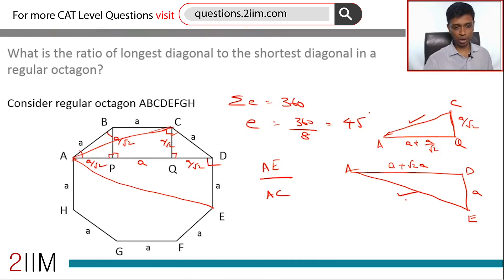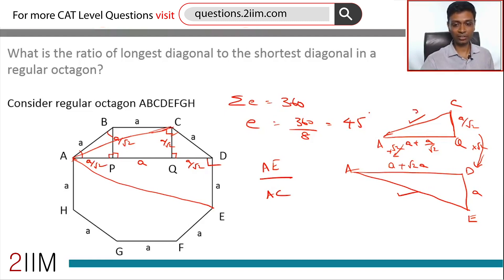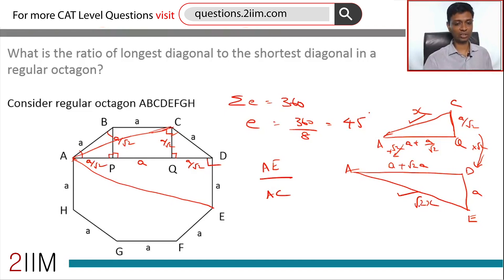There is a quicker approach if you can spot it. Triangles ACQ and AED are similar triangles — just smaller and bigger versions of each other. If one leg is x, the corresponding leg in the larger triangle is √2·x. So AE is √2 times AC, meaning AE/AC equals √2. We don't even need to compute the individual diagonal lengths.